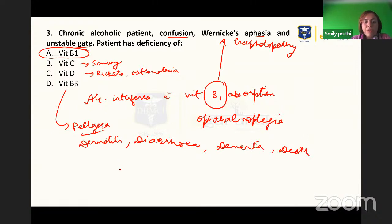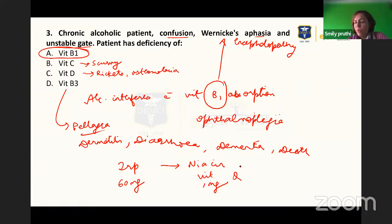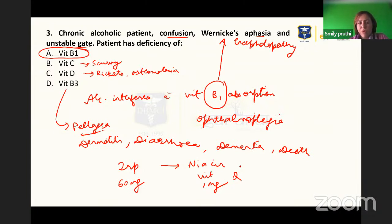Vitamin B3 is formed from tryptophan — 60 mg of tryptophan, which is an amino acid, makes only 1 mg of niacin. This is frequently asked. We are revising topics that are asked in the exam, so focus is on vitamins and minerals.